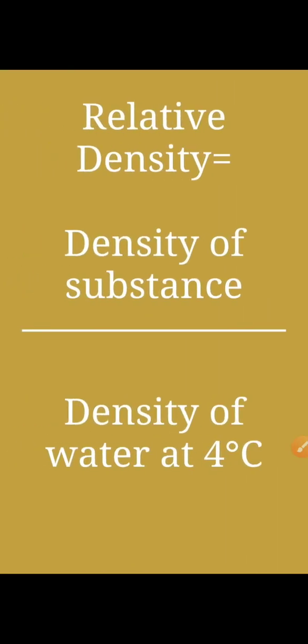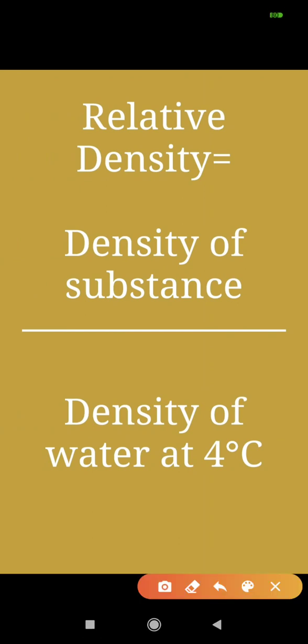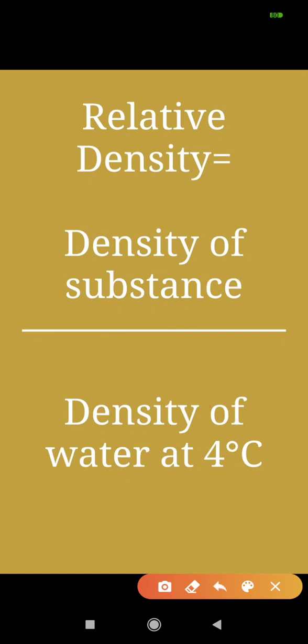Firstly, we will discuss the formula of relative density. Relative density is equal to the density of the substance divided by the density of water at 4 degrees Celsius in the denominator.